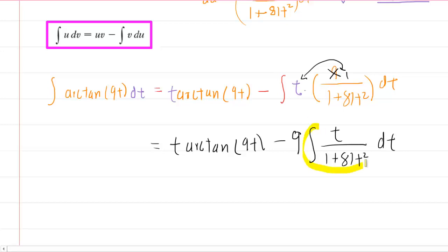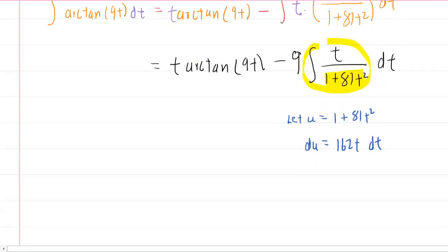To evaluate this integral right here, we'll require another specialized technique. We're going to need to do u substitution on this. So, we're going to let u equal the denominator here, 1 plus 81t squared. The next thing you do is take the derivative. The derivative would be 162t dt. Then I like to solve for dt when I do my u substitutions. To solve for dt, I would divide both sides by 162t.